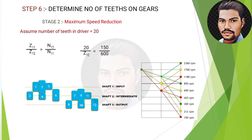The last step — step six — is determining the number of teeth on each gear. Always start from the last stage. At stage 2, gear 11 is the smallest, so I assume Z11 = 20 teeth. Gears 11 and 12 give the minimum speed for each input, so gear 11 is the pinion and gear 12 is the gear. The formula used is: Z_P / Z_G = N_G / N_P.